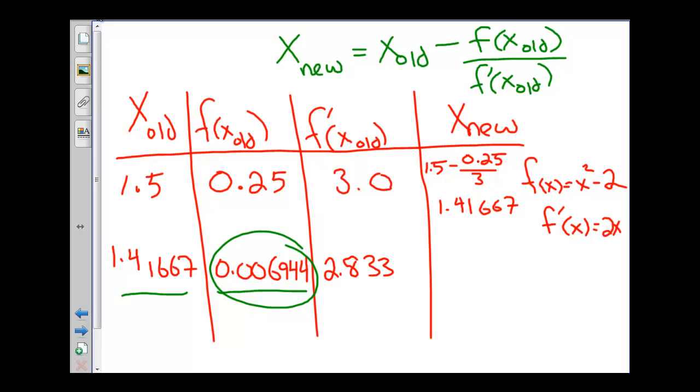And our derivative is 2 times 1.41667. Our derivative is 2.83334. And that means that our new value is our old value, which was 1.41667 minus 0.006944 divided by 2.83334. This will give us our new value. This is the value that we will then change our value into when we go to do the next round of evaluation, if we find that that's necessary.